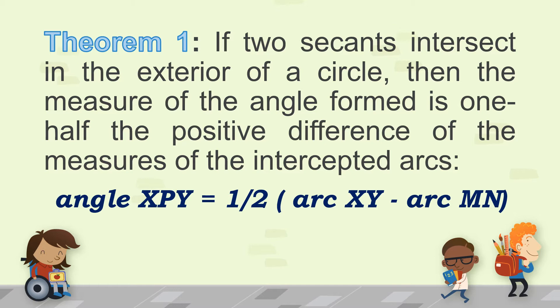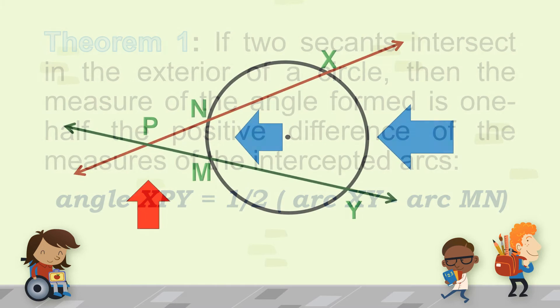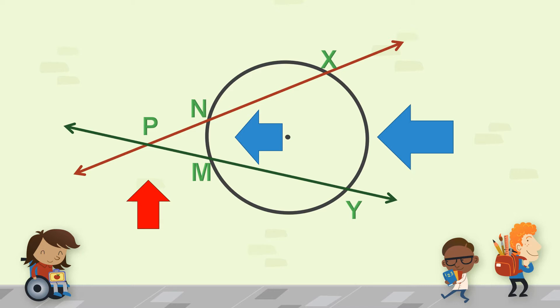In this figure, angle XPY is equal to one-half times the difference of arc XY minus arc MN. So to further understand, let's have our figures. Remember that this theorem is talking about two secant lines that meet at a point outside the circle, and if we would like to get the measure of the angle formed by two secant lines, this angle XPY — or angle YPX, or we can also call it angle P.